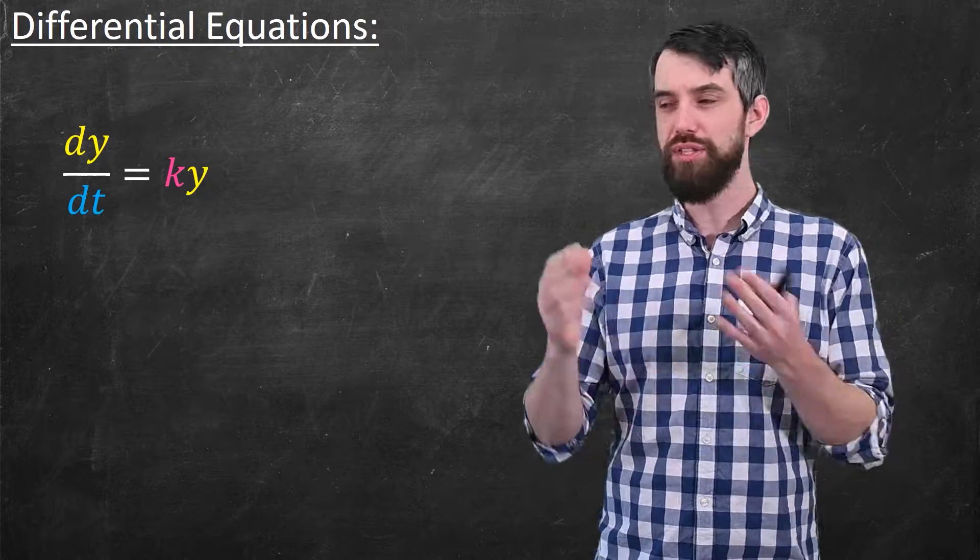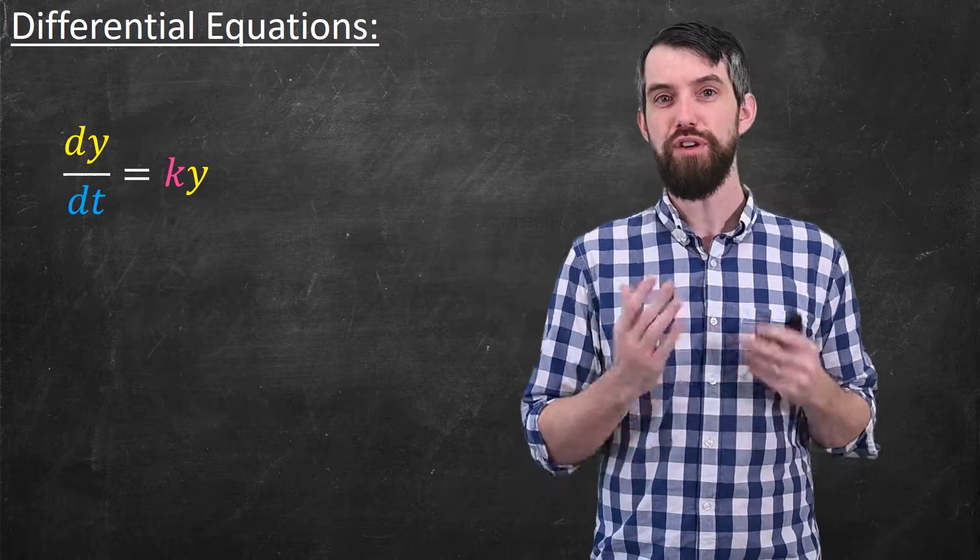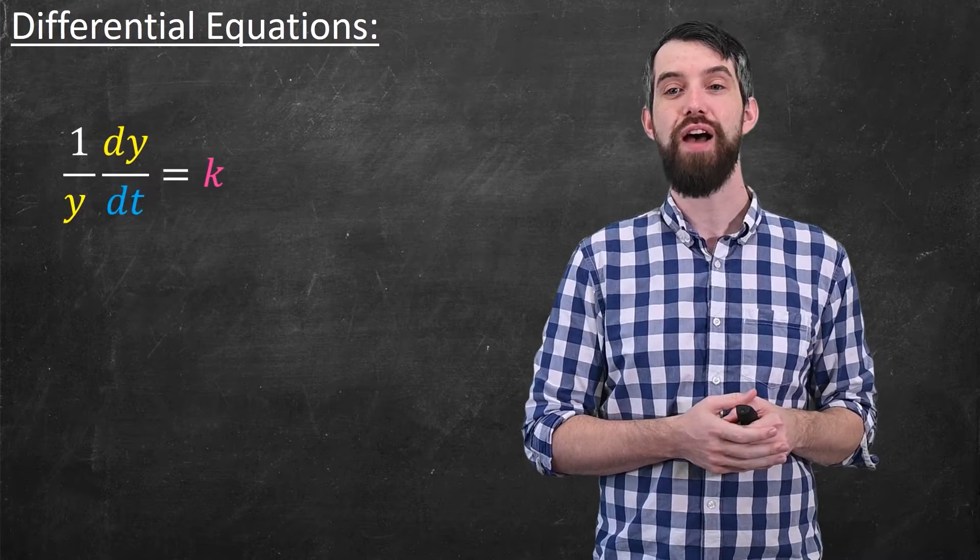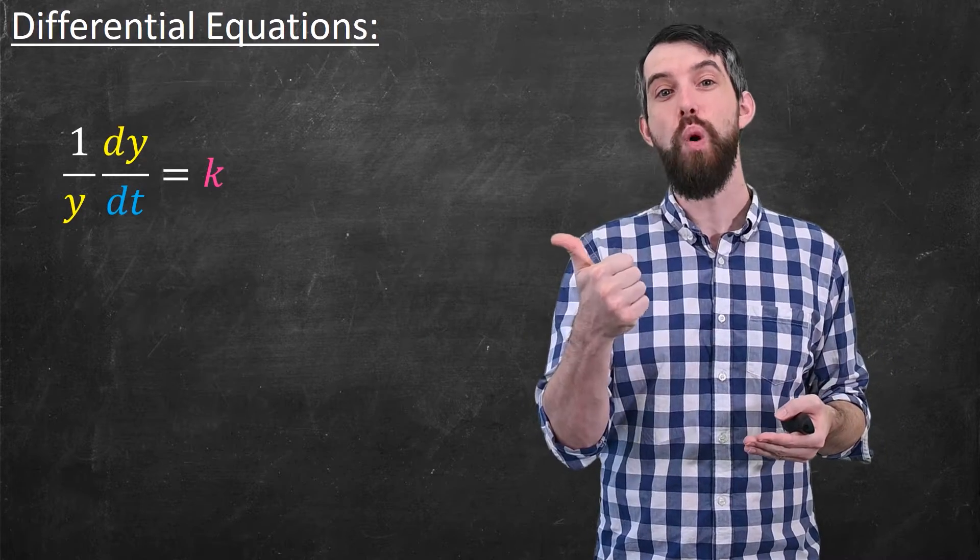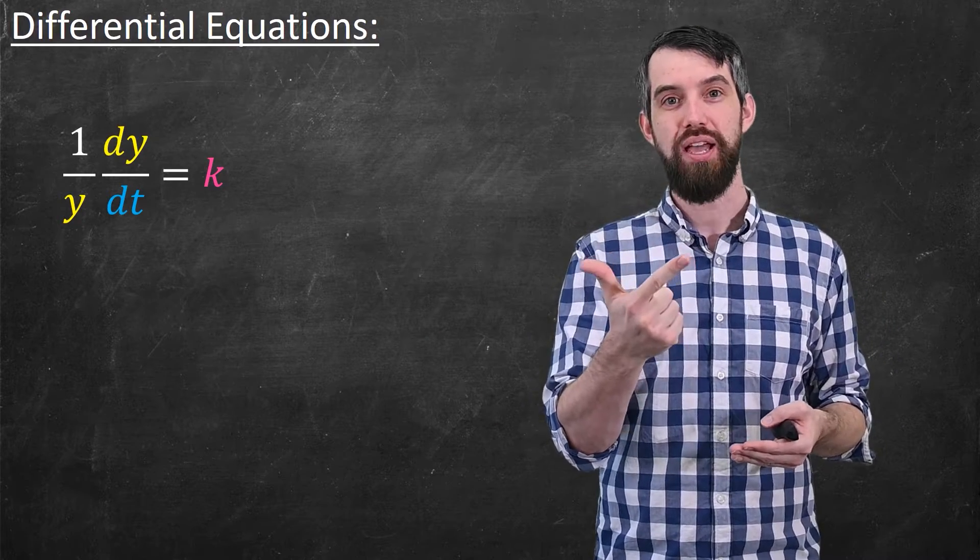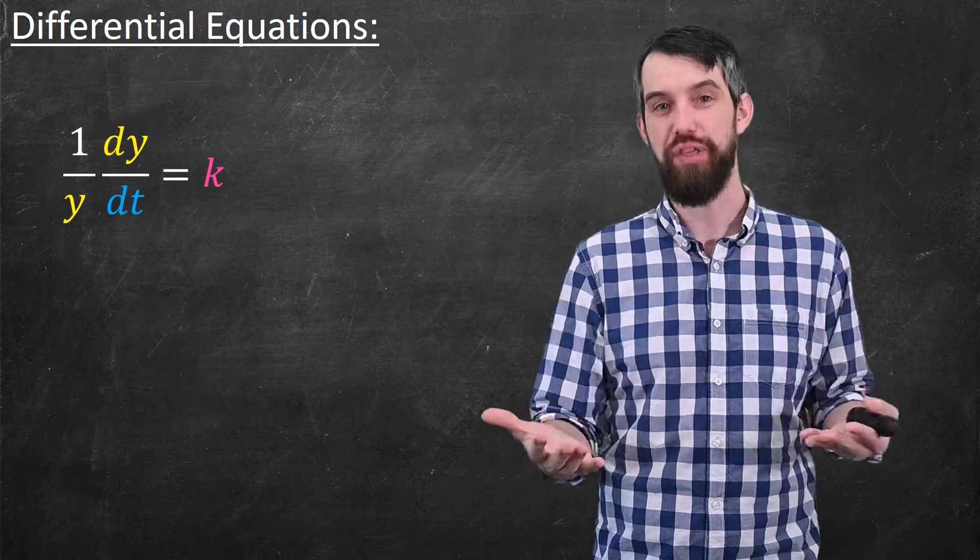So now I want to manipulate this equation. The first thing I'm going to do is I'm going to divide out by this value of y. I'm doing this so that on the left-hand side, I have the derivative of y and something that depends on y. And on the right-hand side, there is nothing that depends on y.